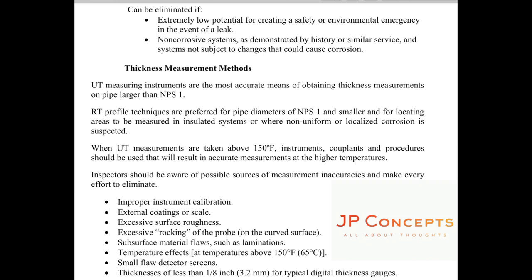UT measuring instruments are the most accurate means of obtaining thickness measurements on pipe larger than 1 inch. For pipe less than 1 inch, the preferable method is profile RT. When UT measurements are taken above 150°F, instruments, couplants, and procedures should be used accordingly. Be vigilant regarding improper instrument calibration, external coating or scale, excessive surface roughness, and subsurface material flaws.